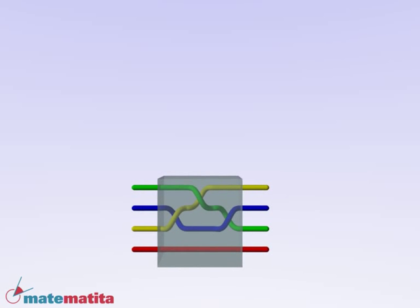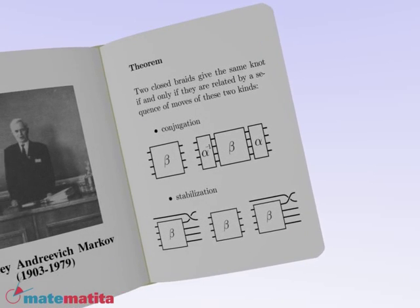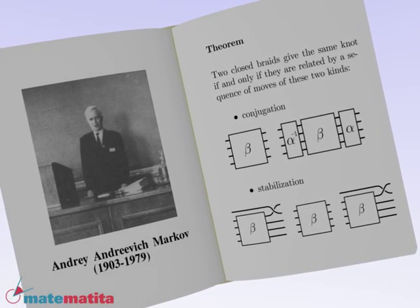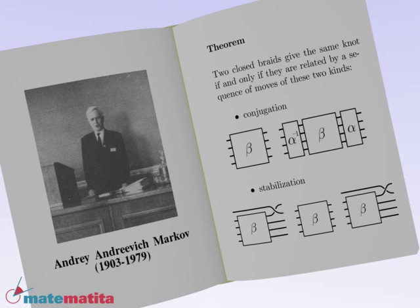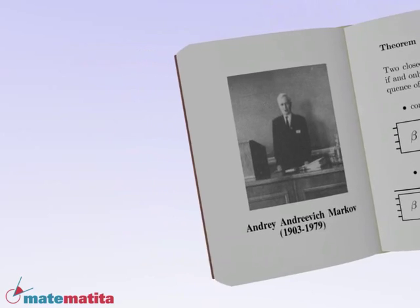A Russian mathematician, Markov, noticed that two braids give the same knot if and only if they are related by a sequence of moves of the two kinds we have just seen. This is now known as Markov's theorem, even if the first proof is probably due to one of his students.